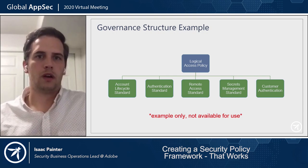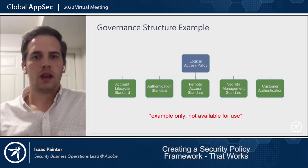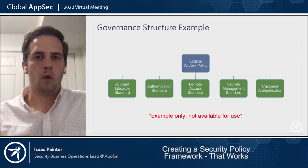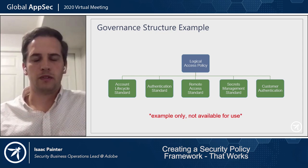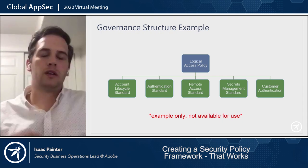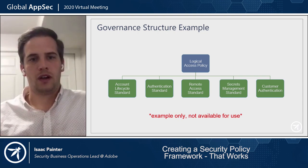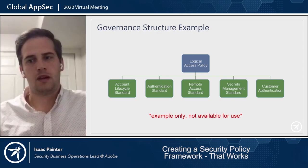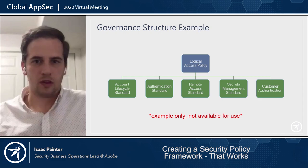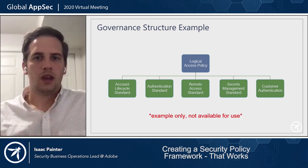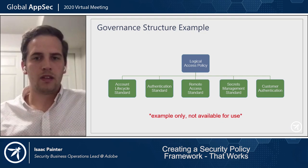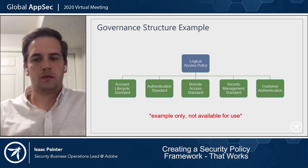Here's an example of what a governance structure might look like. You might have a policy called the Logical Access Policy, broken out into multiple different standards covering subject areas like account lifecycle, authentication, remote access, secrets management, and customer authentication. Rather than putting all these subjects into one 30-page policy that's unwieldy and hard to read or update, breaking it into separate subject-area standards makes it far more consumable.